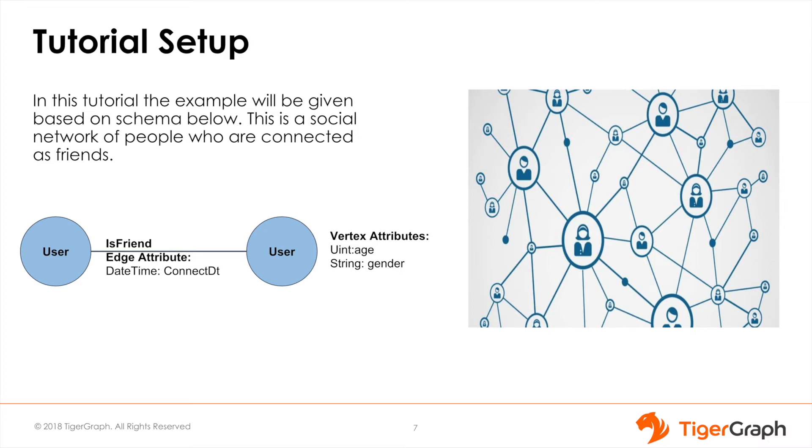Each user or person is a vertex with attributes age and gender, and the edge connecting these users will contain the attribute of the day they first became friends.